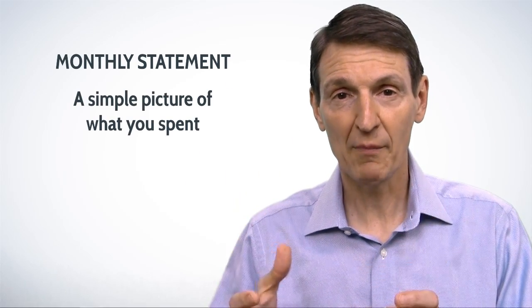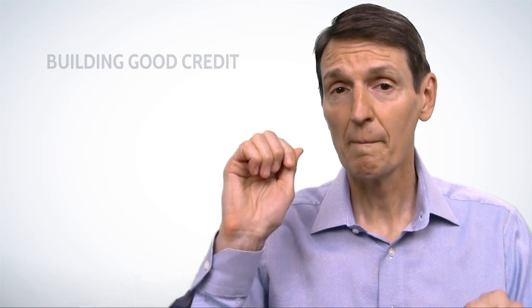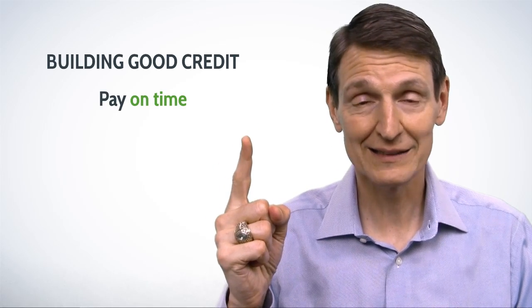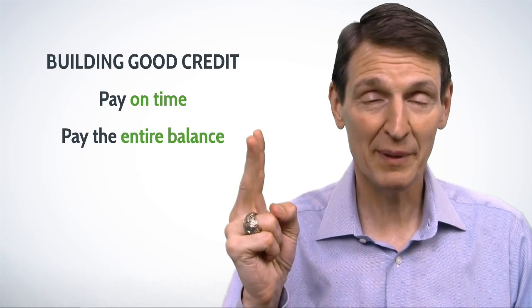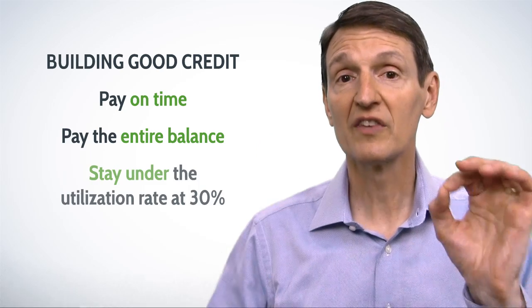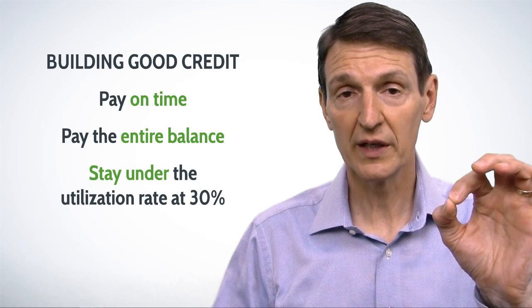Let's go to building good credit. Pay on time, pay the entire balance off, and stay under the utilization rate at 30%. What's that? Well, if you have two credit cards and your limits are $5,000 and $3,000, that's $8,000.